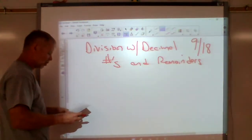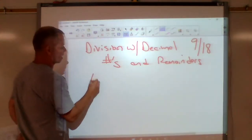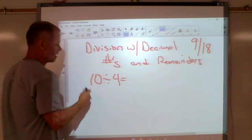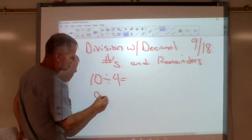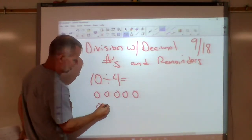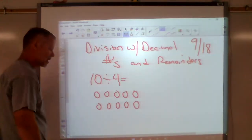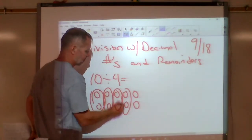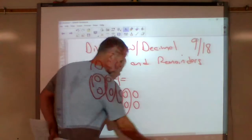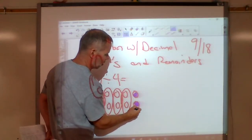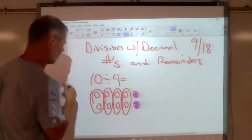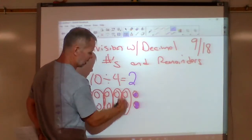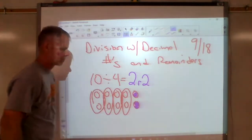Sometimes you have problems that don't work out exactly, or evenly, like 10 divided by 4. That's not going to equal out. I've got 10 and I want to make four equal groups. I can make a group here, and here, and here, and here, but now I've actually got two left over, or two remaining, that are not in any groups. This would be two in each group with the remainder of two.